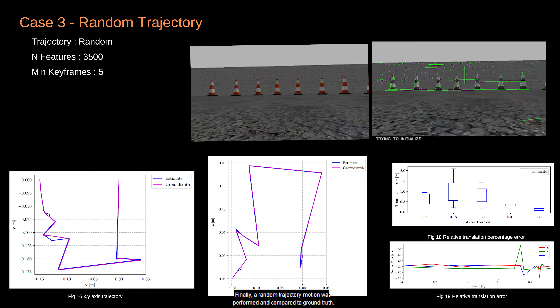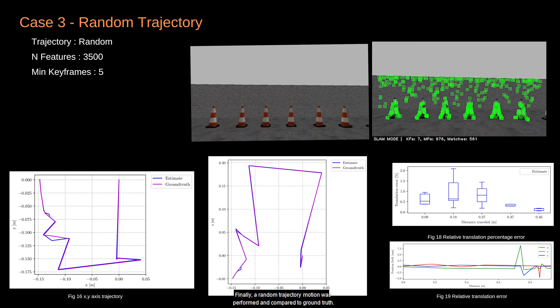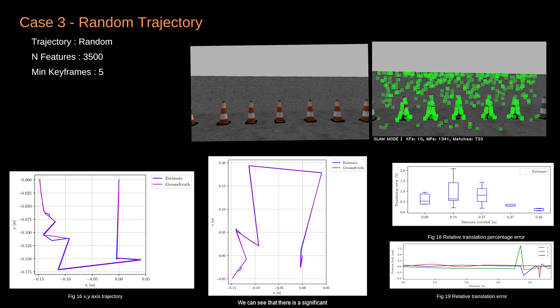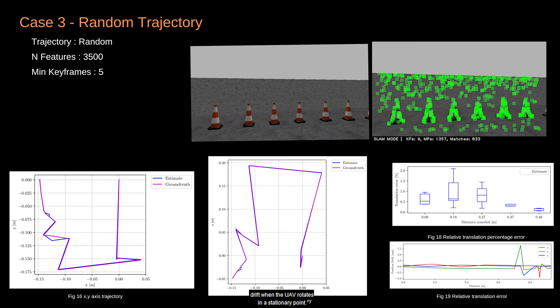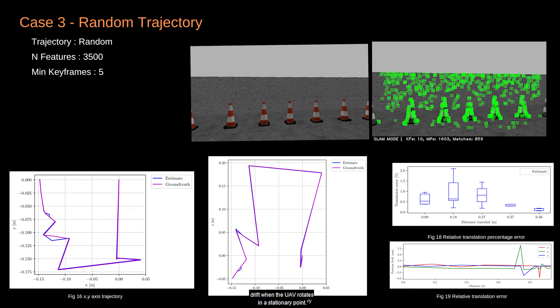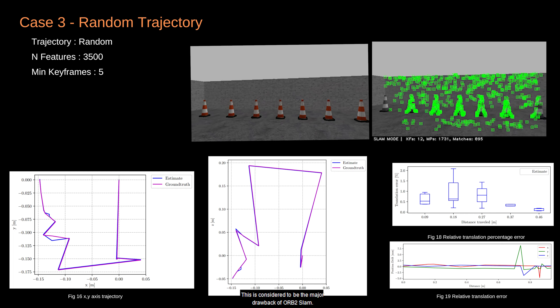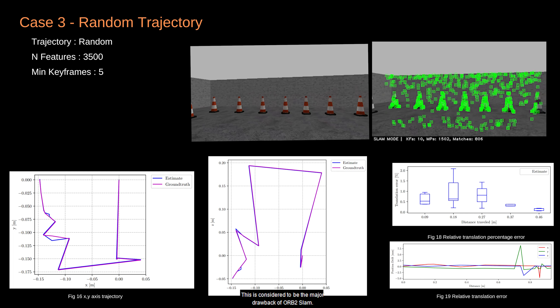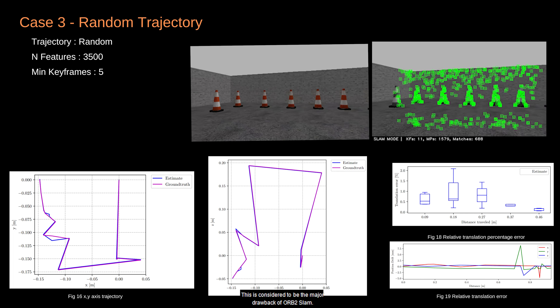Finally, a random trajectory motion was performed and compared to ground truth. There is a significant drift when the UAV rotates in a stationary point. This is considered to be the major drawback of ORB2 SLAM.